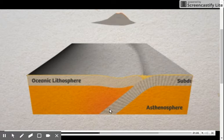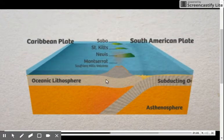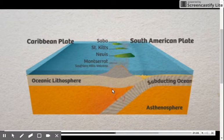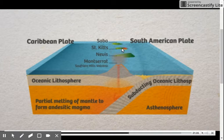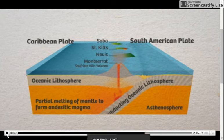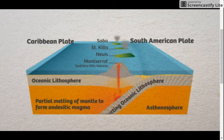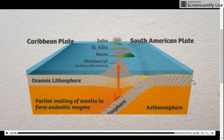As the subducted material melts, it's going to create volcanoes on the overriding ocean lithosphere. Because those volcanoes eventually pop out of the water, we call them island arcs because they make islands in the ocean. With ocean colliding with ocean, the older, colder, denser one will always be the one that is subducted.